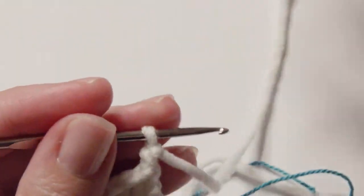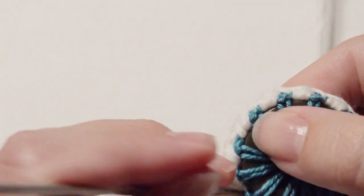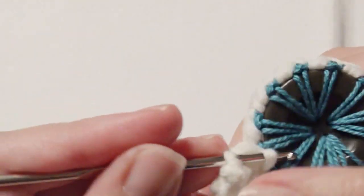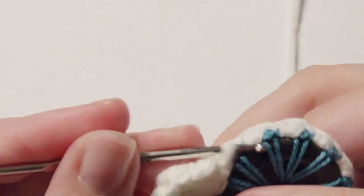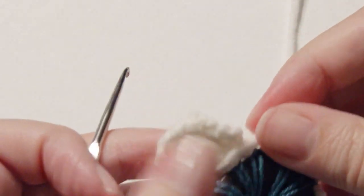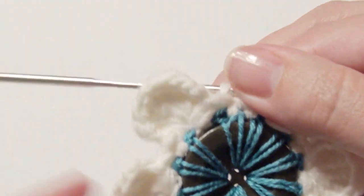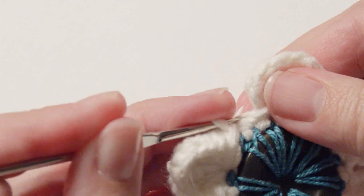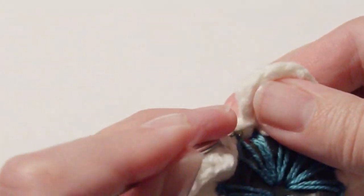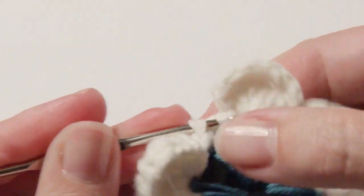Chain two and slip stitch in the same stitch as the other stitches, and then just repeat that around for your petals. Okay, once you're done with your last petal, slip stitch to complete and then pull through and weave in all of your ends.